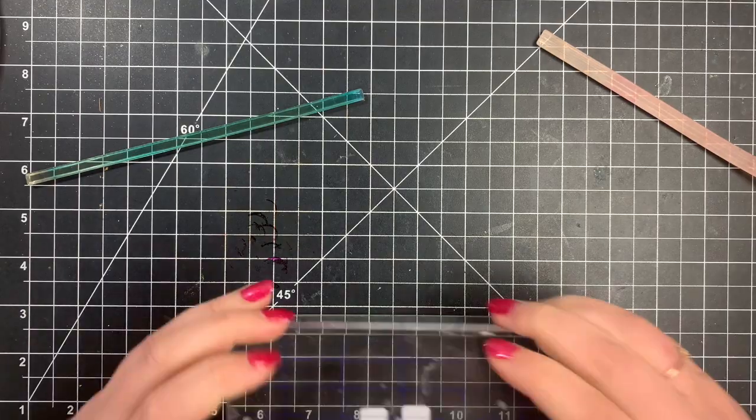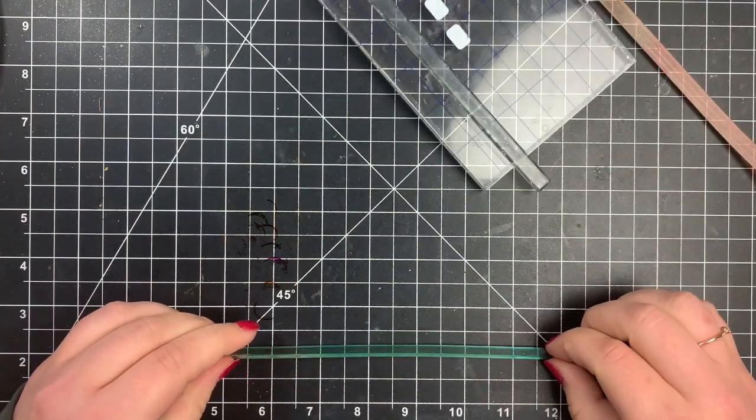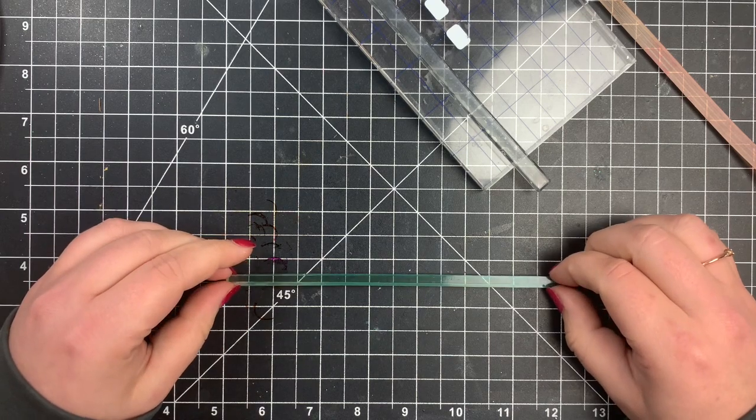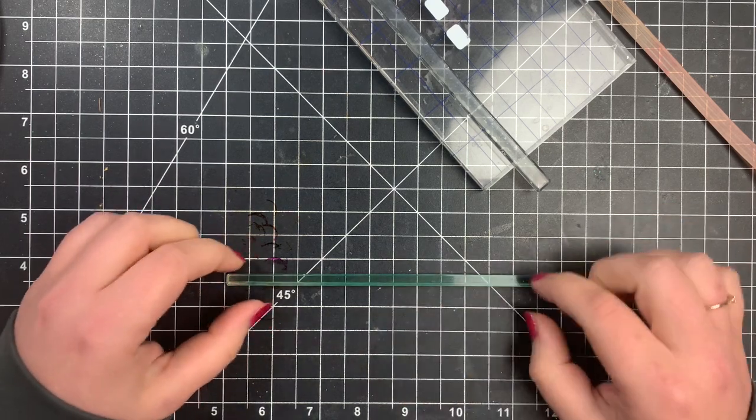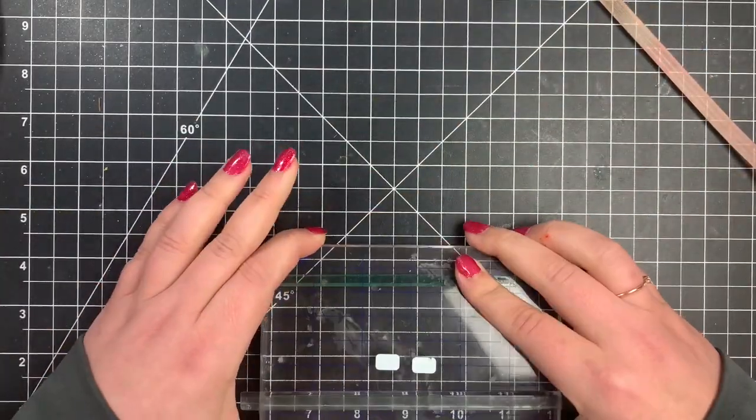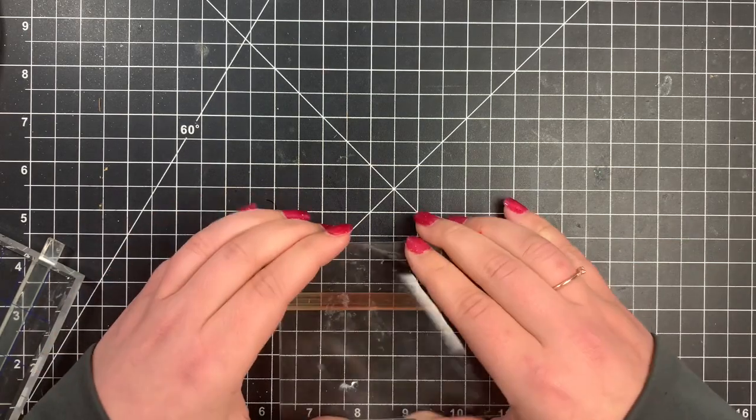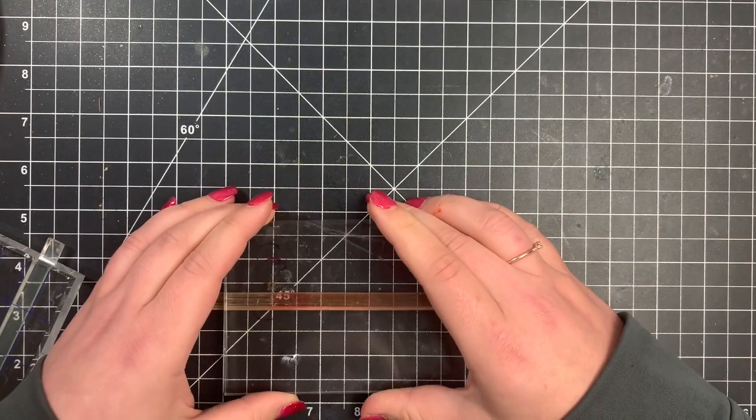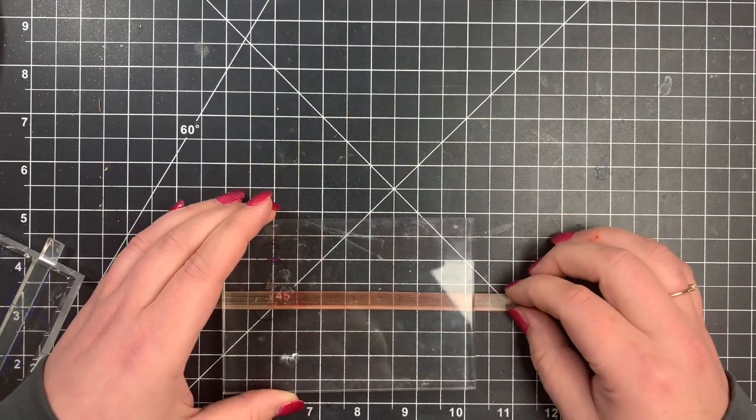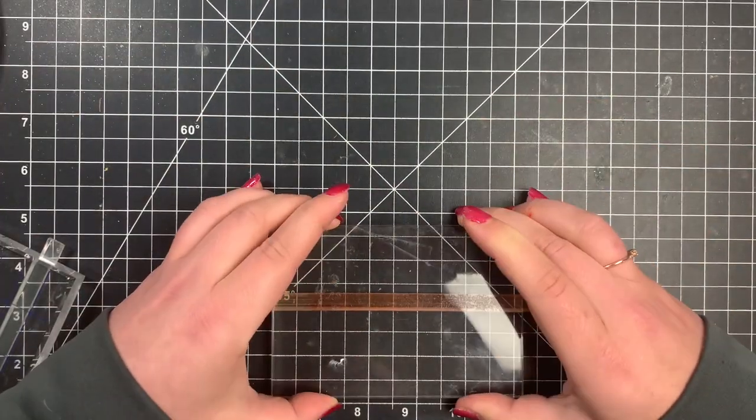I'm using my grid mat to make sure that they are completely straight before popping those onto an acrylic block. I didn't have enough blocks that were big enough, even these aren't big enough, but they're big enough for the paper anyway. So I actually use the same block for two of the images and that's perfectly fine. So for the first card, we are seriously just stamping. There is no techniques at all except for stamping for this one.